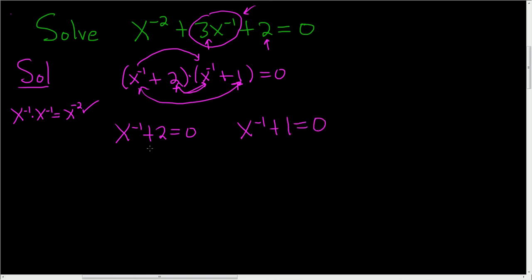To solve these equations, just subtract 2 for this one. And so x to the negative 1 is equal to negative 2. Then rewrite this. So this is 1 over x equals negative 2. The exponent just became positive because we brought it downstairs.